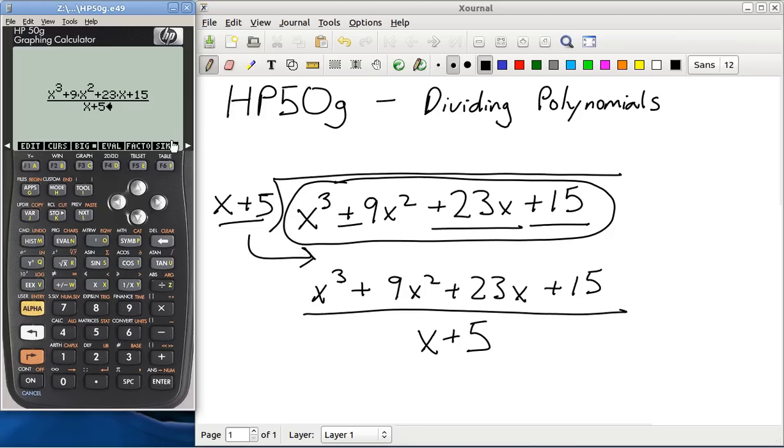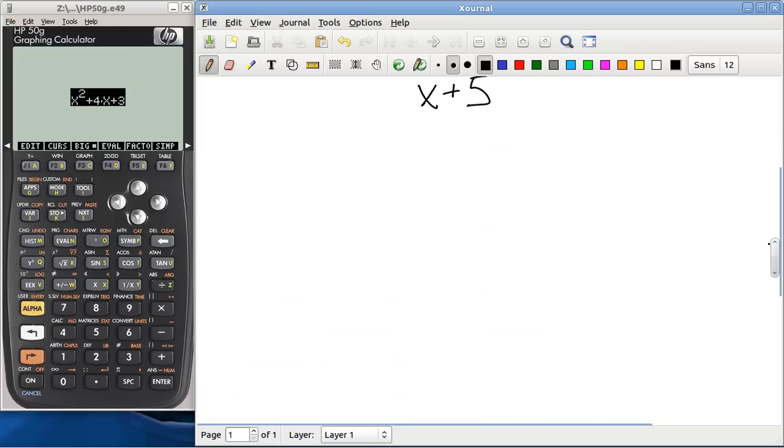Now what we want to do is simplify this. Simplify the whole thing, highlight all of it, hit simplify. And then we're left with x squared plus 4x plus 3.